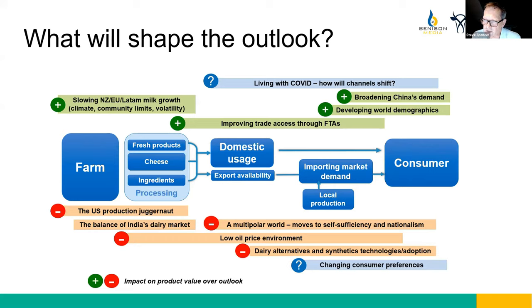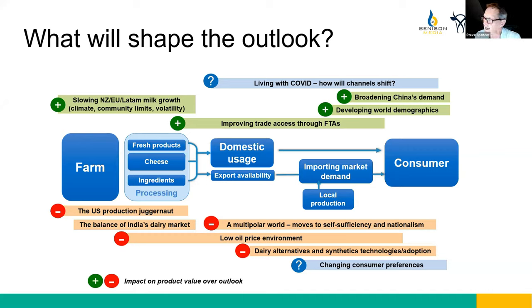We see slow growth in milk supply coming from major producers such as New Zealand, the European Union, and Latin America. New Zealand faces constraints around community acceptance of dairying, environmental impacts, high debt, and high land values, limiting capacity for strong future growth. The European Union is running up against environmental limits and is constrained by how dairy farmers can respond to volatile conditions.